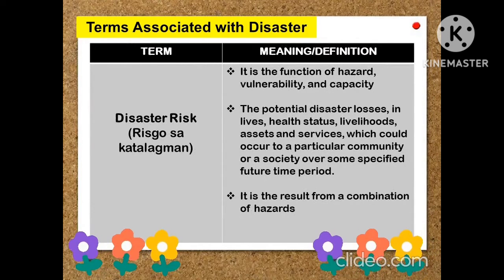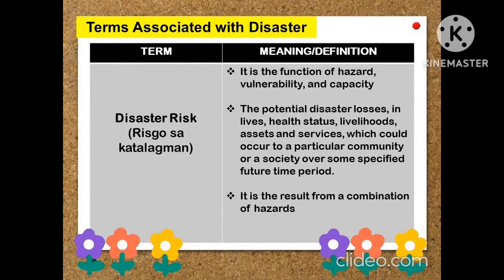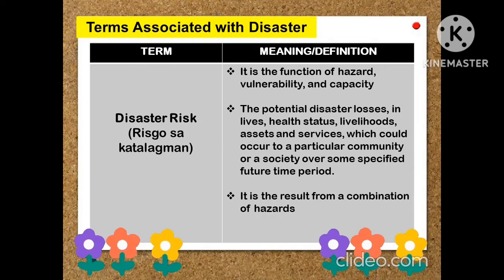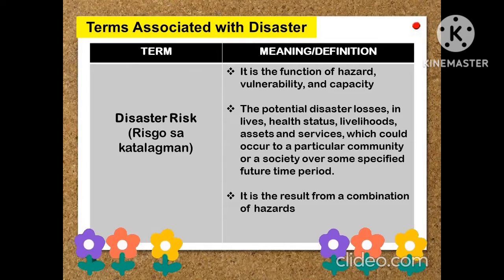Disaster risk is the function of hazard, vulnerability, and capacity. It refers to the potential disaster losses in lives, health status, livelihoods, assets, and services which could occur to a particular community or society over some specified future time period. It is a result from a combination of hazards.